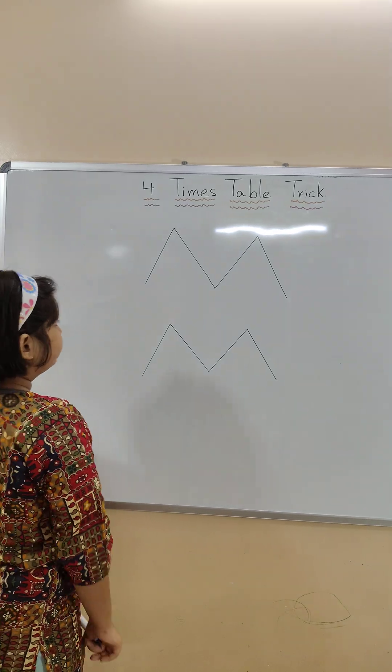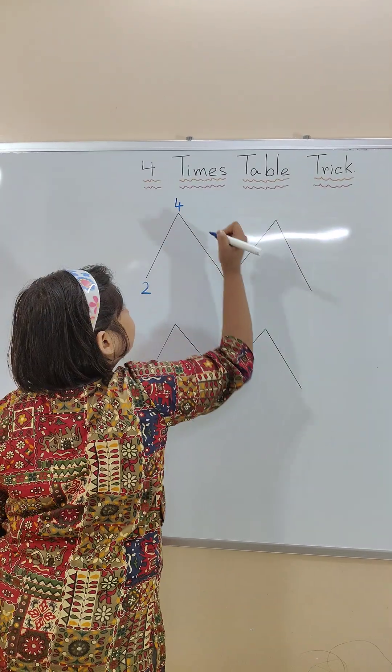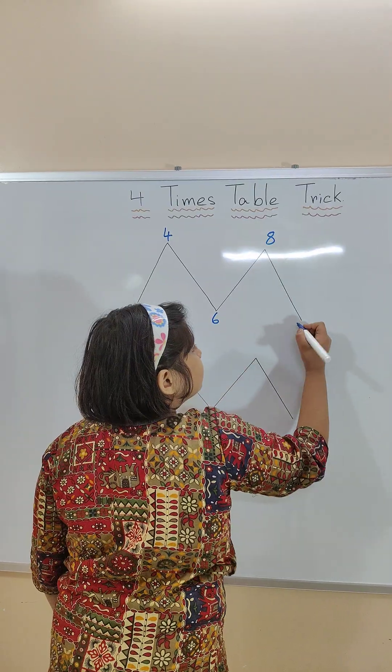First we will draw 2 M like this. In the first M we will write 2, 4, 6, 8, 0.